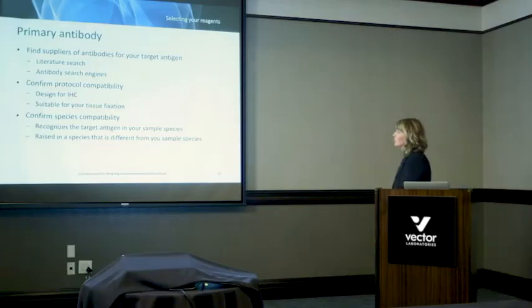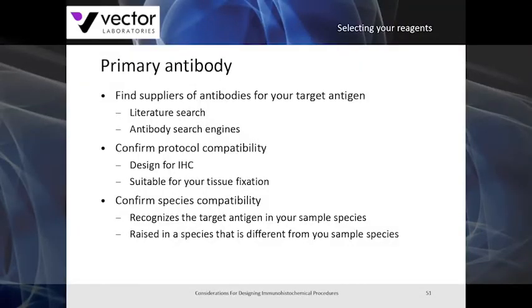The first reagent you'll need to select is your primary antibody. This is the antibody that will detect the antigen of interest in your tissue specimen. You have several resources available to choose a primary antibody — literature searches or antibody search engines — but keep in mind some important decisions. First, confirm that the primary antibody is compatible with the protocol you'll be using, and that it's designed for immunohistochemistry and not other applications like Western blotting or ELISA.